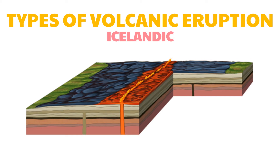The Icelandic type is characterized by effusions of molten basaltic lava that flow from long parallel fissures. Such outpourings often build lava plateaus.